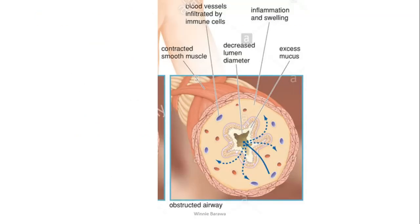Here is how the airway changes in status asthmaticus. As you can see, the airway is now more obstructed. The pathophysiology involves an inflammatory process with bronchospasm, demonstrated by contracted smooth muscles. Blood vessels carry more immune cells concentrated to this area. There is a decrease in the lumen diameter as the bronchioles narrow, making it difficult for air to flow in and out. Inflammation causes the mucosa to swell further, and mucus production creates additional blockage in the airways.